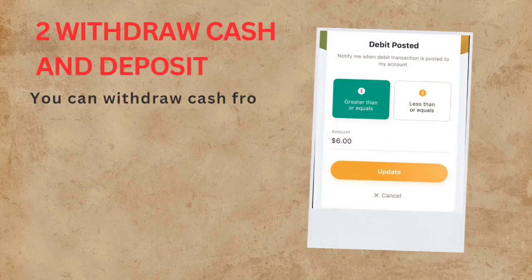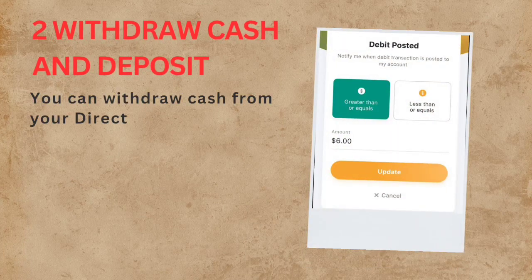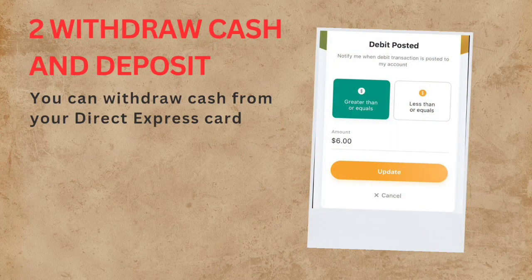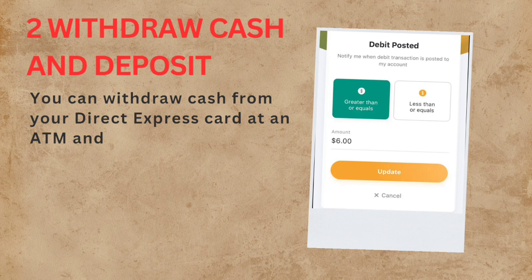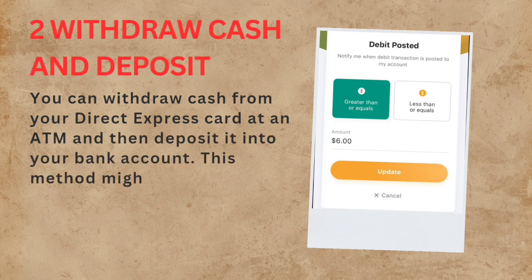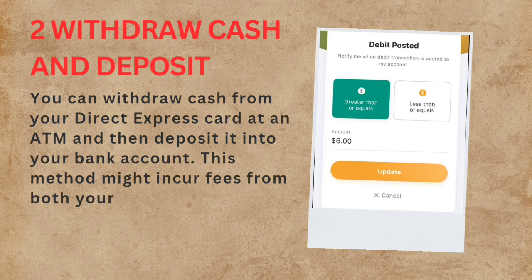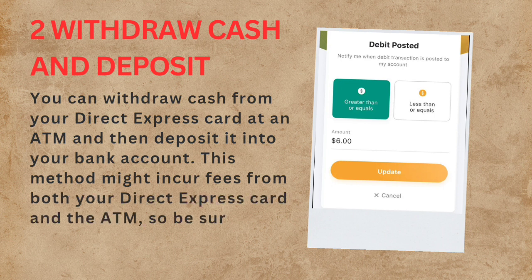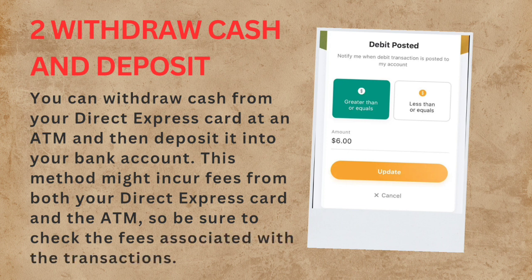Option 2: Withdraw Cash and Deposit — you can withdraw cash from your Direct Express card at an ATM and then deposit it into your bank account. This method might incur fees from both your Direct Express card and the ATM, so be sure to check the fees associated with the transactions.